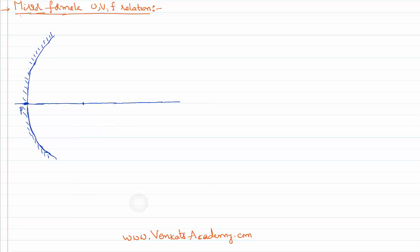This point is called the principal focus, where the light rays are going to come and converge or diverge from. This point is the center of curvature, so the distance between the pole and the center of curvature is nothing but the radius of curvature. Now let us keep an object somewhere — let us assume here is our object, and let me name the object as OJ.